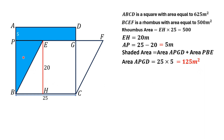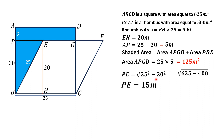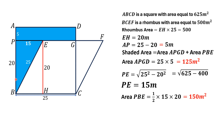Now we move towards the area of this right triangle. So for this purpose, we have to find the length PE. By using Pythagoras theorem, PE will be equal to the square root of the hypotenuse squared minus the perpendicular squared: 25 squared minus 20 squared. So this is equal to 625 minus 400, that is equal to 15 meters. So this length is equal to 15 meters. Now we have everything to find the area of this right triangle. Area of right triangle is equal to half times base multiplied by height. Base is 15 and the height is 20, so the area of this right triangle is equal to 150 meter square.